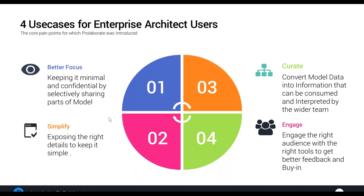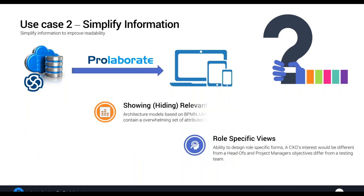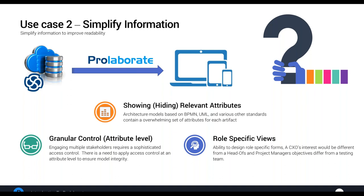The solution was to let users define custom dashboards and custom forms for roles or user groups, so those user groups get to see only selected information. In the previous use case we solved showing or hiding entire sections; now we're talking about attributes. For example, a BPMN 2.0 activity — for those who are process modelers, take a wild guess at how many tagged values there are. It's 76-odd attributes. We don't want to show all 76 attributes for a BPMN 2.0 activity and expect a business user to make sense of it.